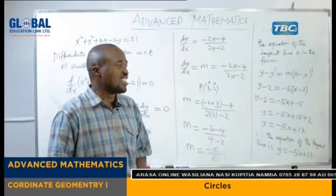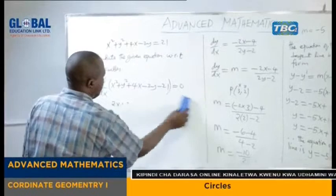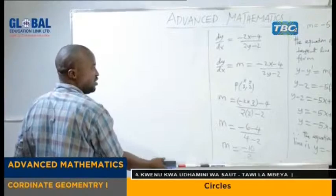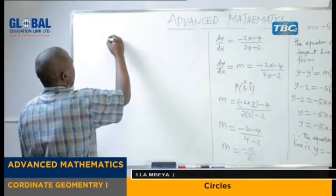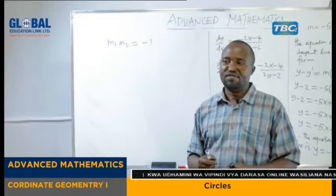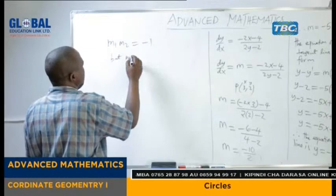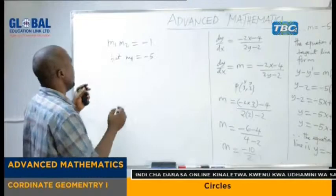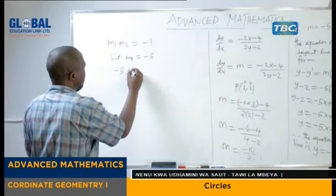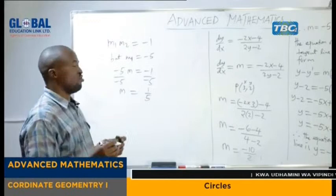So again the next step is to find the equation of the normal. The equation of the normal can be found using the relation m₁ × m₂ = −1. So m₁ times m₂ equals negative 1. We take the slope we have, that is m₁ equals negative 5. Substituting: negative 5 times m₂ equals negative 1, so dividing by negative 5, m₂ equals 1 over 5. Now we have the slope that will help us find the equation of the normal.